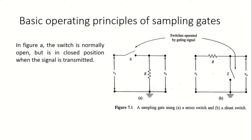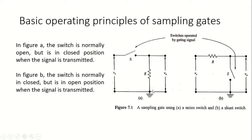The switch is normally open but is in the closed position when the signal is to be transmitted from input to output. In the second figure (b), we have a switch in shunt with the input signal. Here the switch is normally closed, but is in the open position when the signal is to be transmitted.